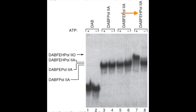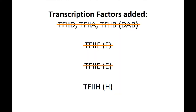Finally, in lanes 7 and 8, we see that the addition of TF2H forms the complex DAB-FEH + Pol IIa. Here, the addition of ATP does change the complex to a lower mobility. The researchers show that mobility slowed such that it was clearly no longer composed of RNA polymerase IIa, but instead IIo. Because TF2H converted Pol IIa to IIo in the presence of ATP, we can say that TF2H was probably the kinase that performed the phosphorylation.